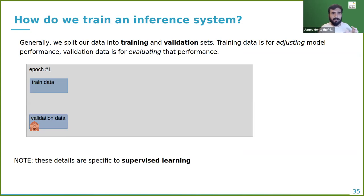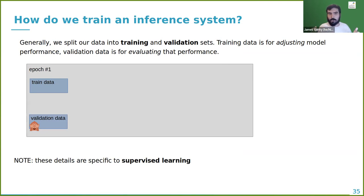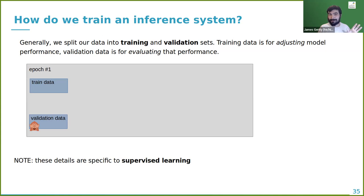Training: we take our data and split it into a training set and a held-back validation set. We hold back some data because you can get great performance on training data simply by memorizing it — just like having the test answers in advance. The validation set tells us whether we're actually generalizing. This is supervised learning, where we provide training data with correct answers; unsupervised learning is out of scope here.